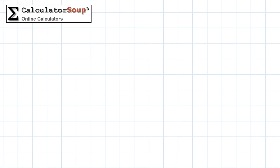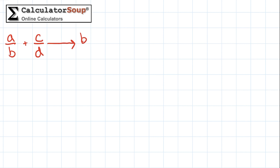To start, let's write down the fractions we want to add. Before we use real numbers, we'll use some placeholder fractions, A over B and C over D. There are two methods for adding fractions based on the denominators. If the denominators are the same, or B equals D, you add the top numbers together and put the result over the common denominator. If the denominators are different, or B does not equal D, we first need to find the least common denominator of the fractions, or LCD.